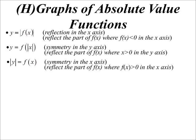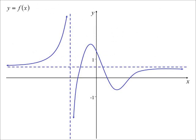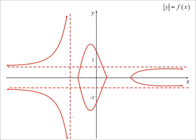Now, |y| = f(x). What's happening here? I can substitute in positive and negative numbers but I can only end up with positive answers — it's always the absolute value of y. There's going to be symmetry with the x-axis. What we end up doing is reflecting the part where the original graph is positive in the x-axis. Looking at the picture: the bit below disappears and the bit above gets reflected below.